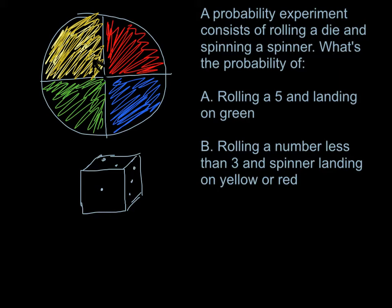What's the probability that you roll a five and then land on green when you spin the spinner? I've got to use the fundamental counting principle here because every time we do probability, we always have to have a fraction, and our denominators are total possible outcomes. The first event has four possible outcomes — four colors the spinner can land on. The second event has six possible outcomes. The fundamental counting principle says you multiply those together, giving us 24 possible combinations.